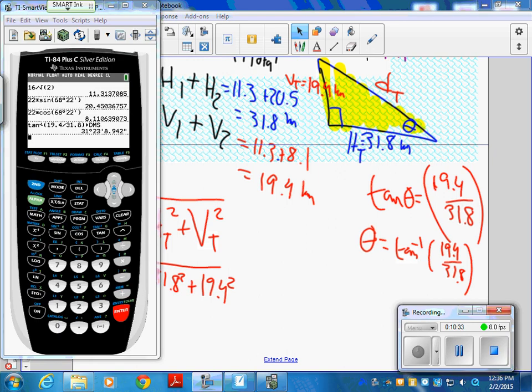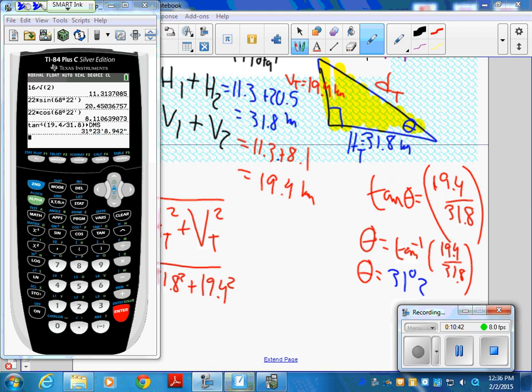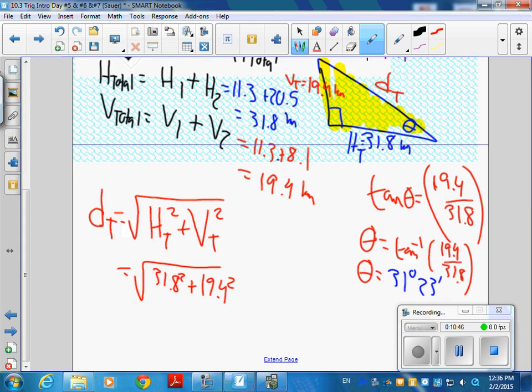All right. So, when I use my calculator, I get 31 degrees, 23 minutes. What did you get for this part here? The square root of 31.8 squared plus 19.4 squared? 0.2? Good. Kilometers.